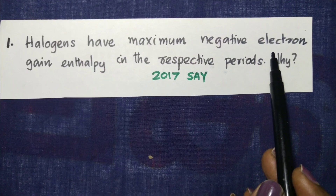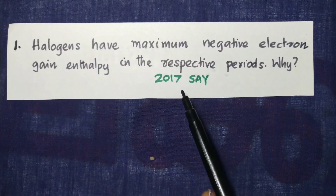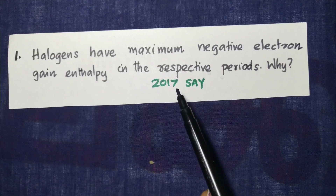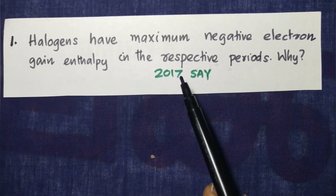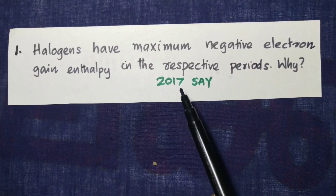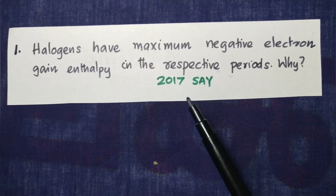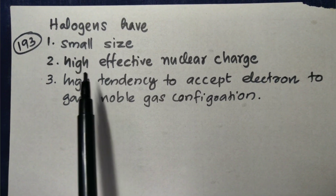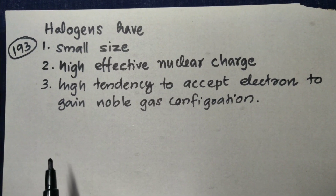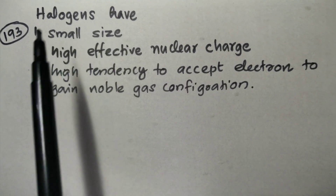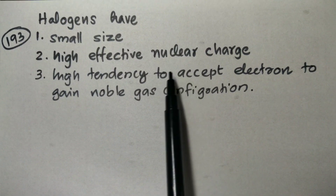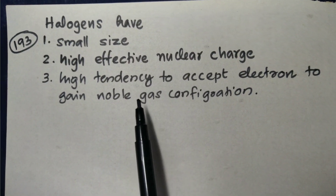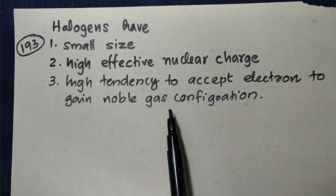Maximum electronegativity. Electronegativity is called electronegativity. The halogens have a small size, high effective nuclear charge and tendency to accept electrons to get noble gas configuration. That is the reason the halogens have high electronegativity and high electron gain.